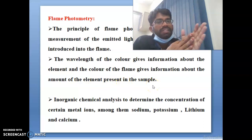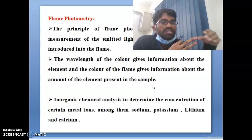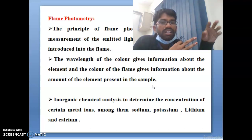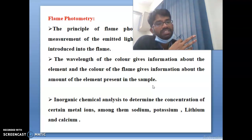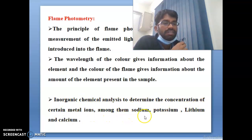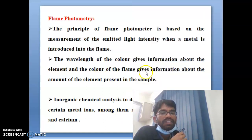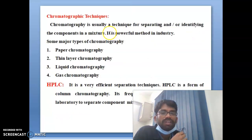Flame photometry is very simple — the metal is exposed into the flame, and depending on how much light intensity is emitted, you can find out how much of the element is present in the sample. For inorganic chemical analysis, flame photometry is used to determine the concentration of certain metal ions such as sodium, potassium, lithium, and calcium.